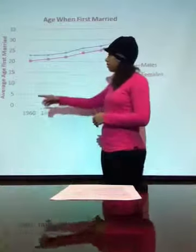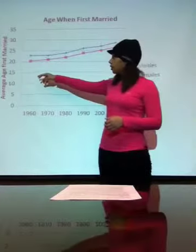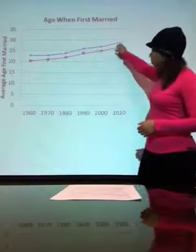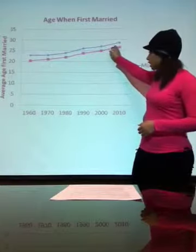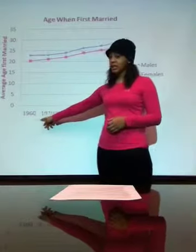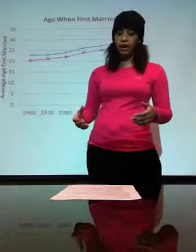That's what this chart depicts. As you can see, these lines go up. We go from between 20 and 23 all the way up to almost 30. This blue line reflects our males' ages, and this pink line reflects our females' ages. And this goes all the way from 1960 to show us what we looked like in 2010.